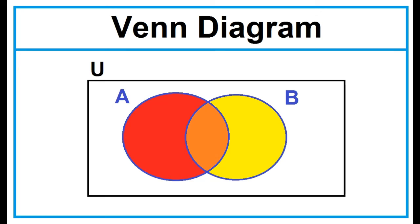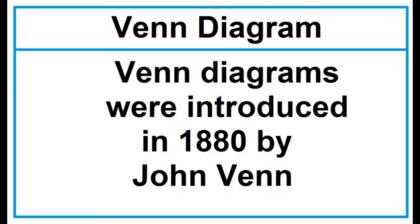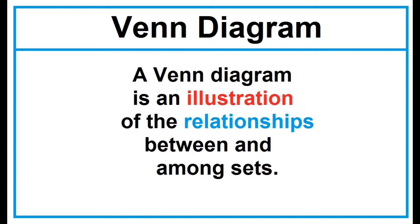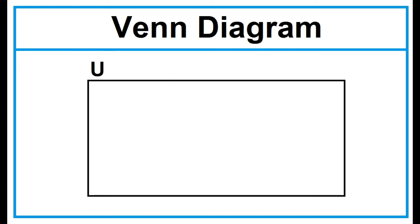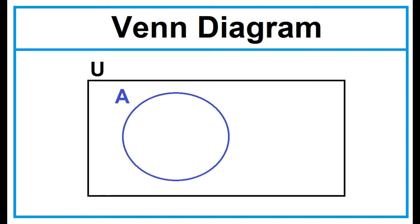Venn diagrams were introduced in 1880 by John Venn. A Venn diagram is an illustration of the relationships between and among sets. A rectangle represents a universal set, and the circle or circles represent a subset or subsets.